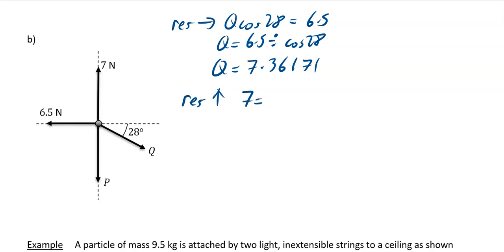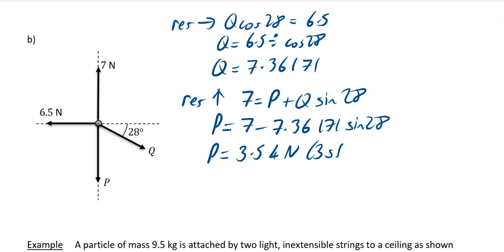Now I'm going to resolve vertically. Going up, I've got 7. Going down, I've got p, and also going down, I've got q sin 28. So that means my p is going to equal 7 minus 7.36171 times sin 28. And if we do that out on our calculator, you'll get 3.54 newtons to 3 sig figs. And then we'll give our answer to q as well. q to 3 sig figs is 7.36 newtons to 3 sig figs.